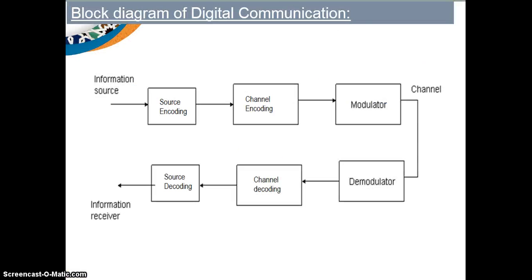This is the general block diagram of a digital communication system. Like any communication system, the block diagram consists of three main blocks: a transmitter, a channel, and a receiver. The transmitter block here consists of the information source, source encoding, channel encoding, and modulator — these four components constitute the transmitter.